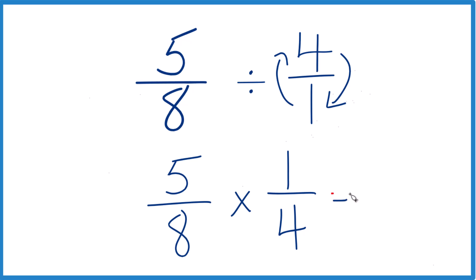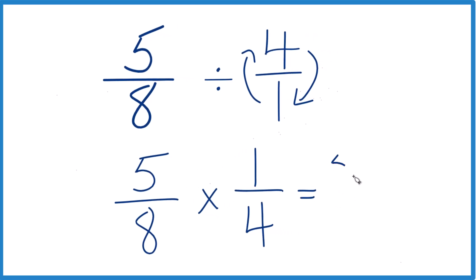So now with fractions, all we need to do when we multiply: 5 times 1, that's 5, multiply the denominators, 8 times 4, that's 32.